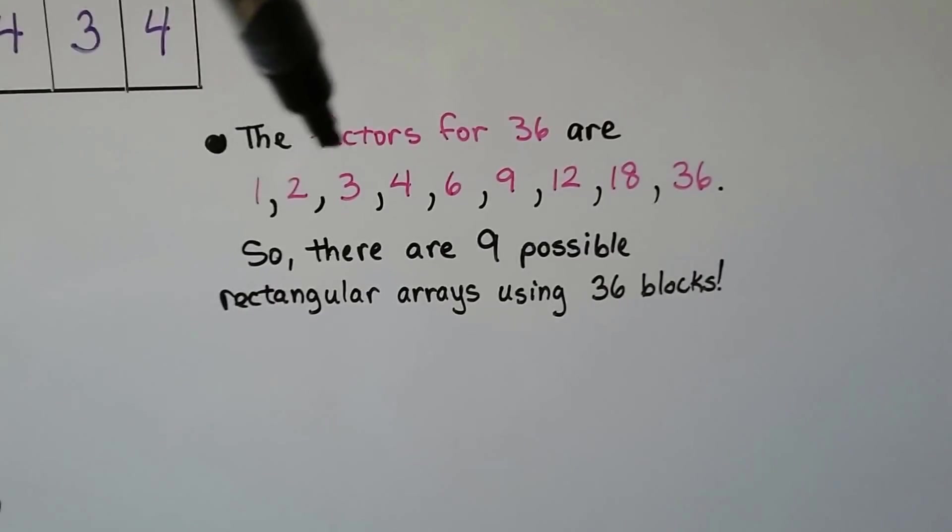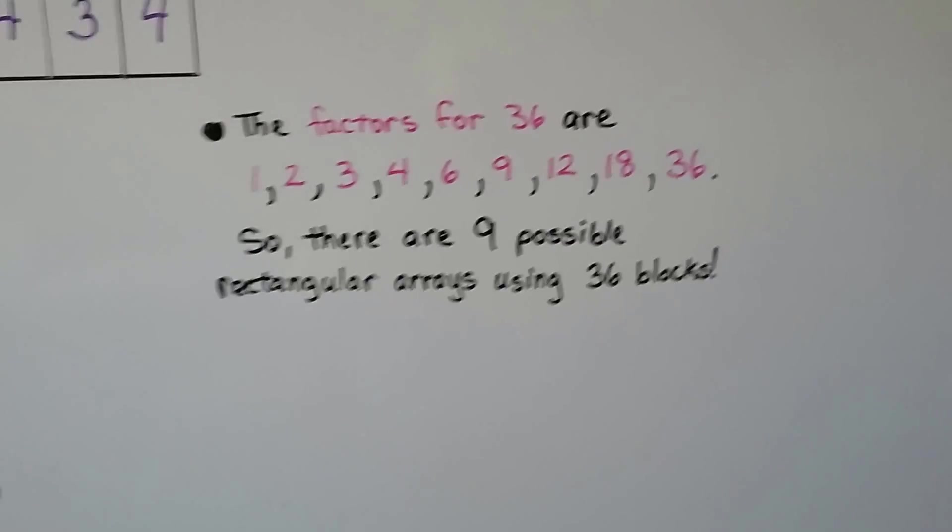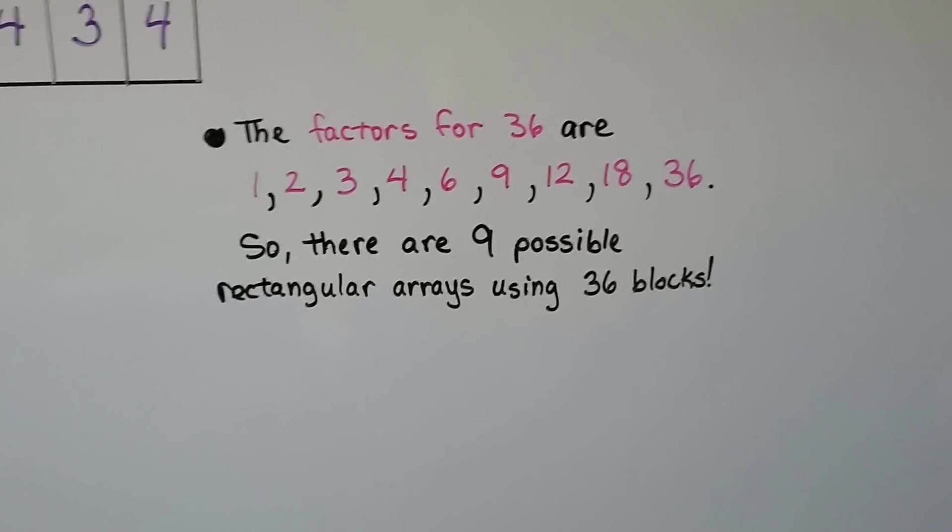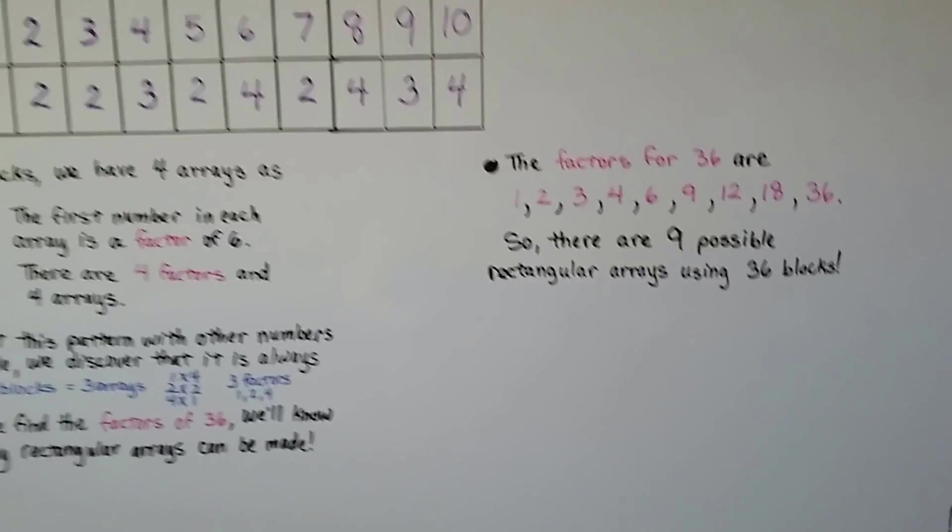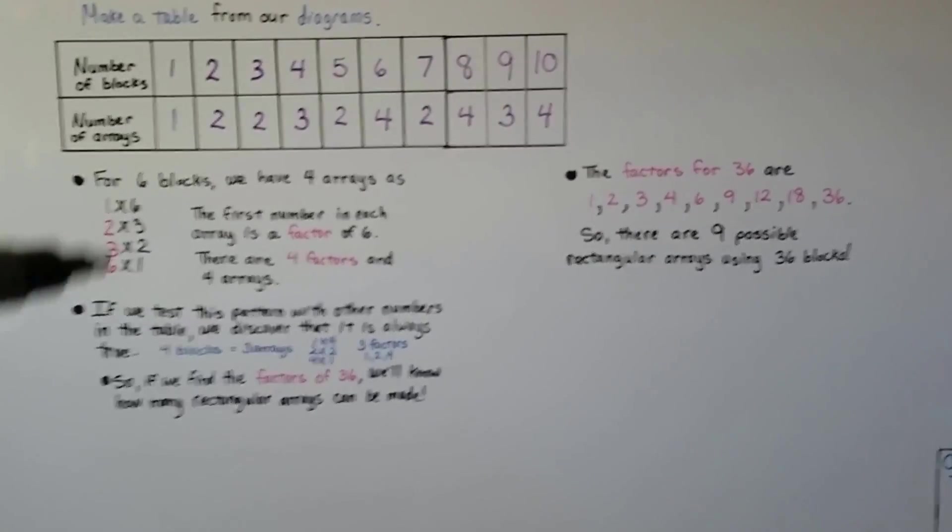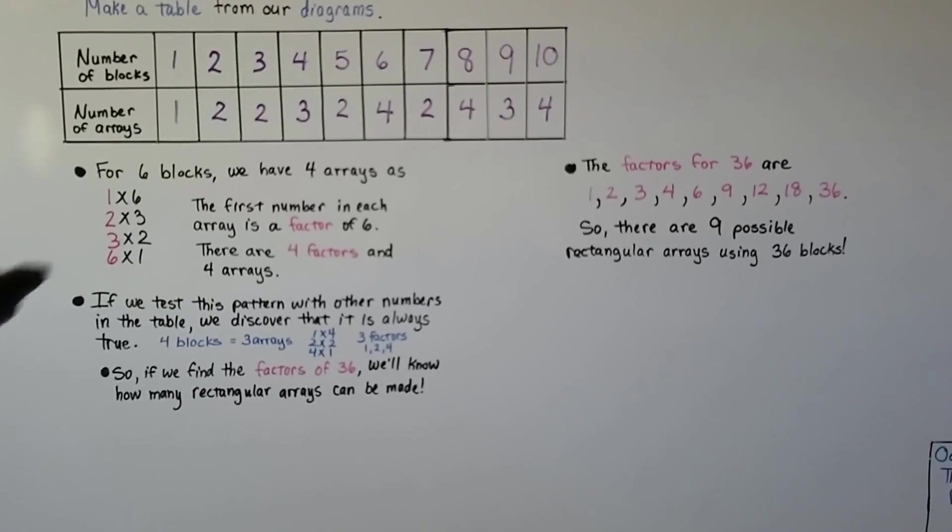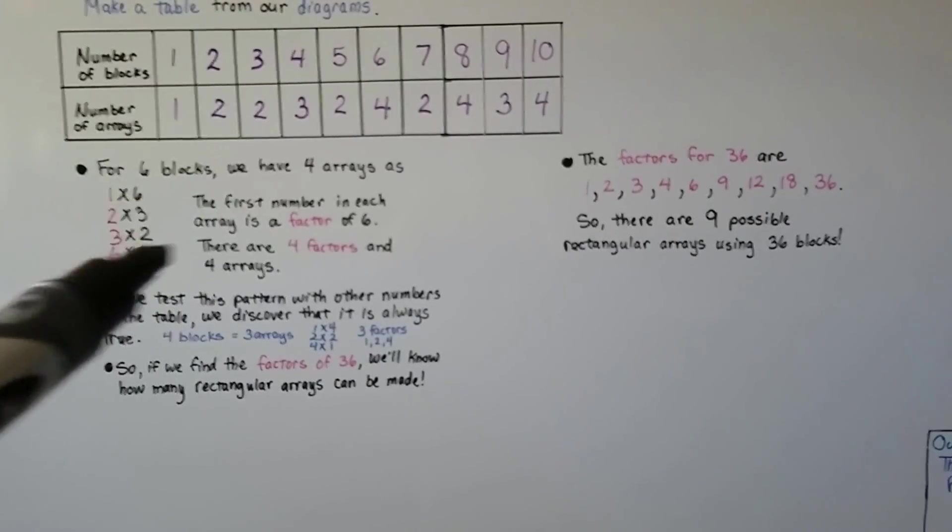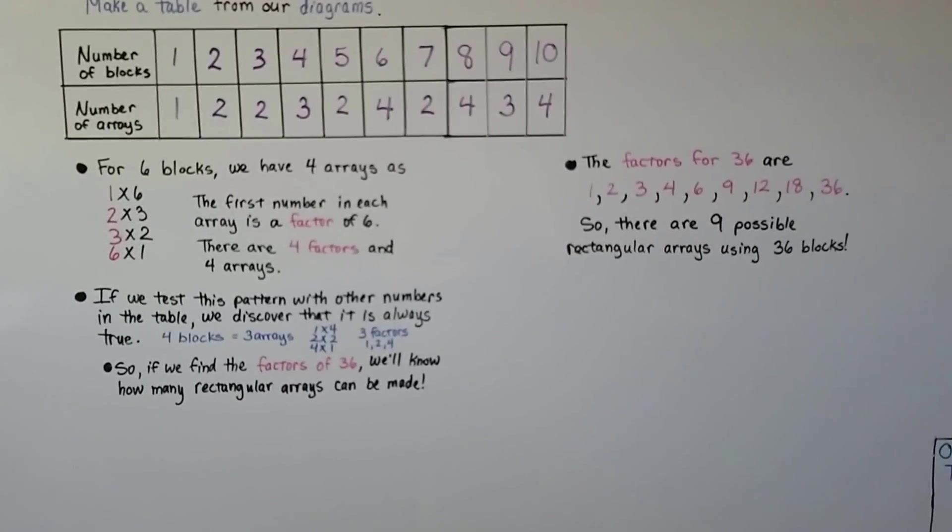We've got 1, 2, 3, 4, 5, 6, 7, 8, 9 factors. That means there's 9 possible rectangular arrays using 36 blocks. See how I did that? The first number in each array is a factor of the number of blocks, and if it works with other numbers, then we know it'll work for 36.